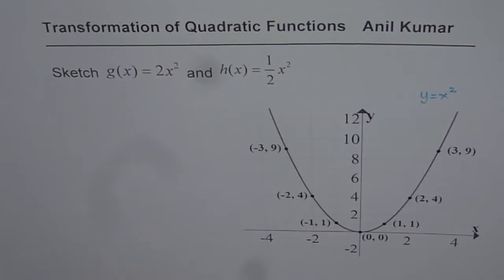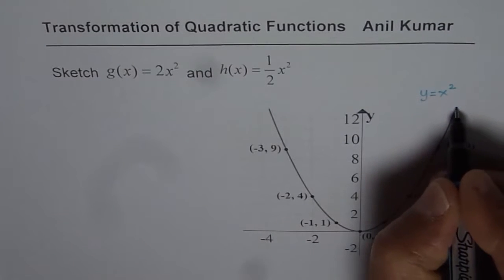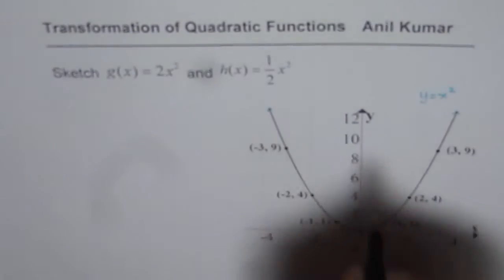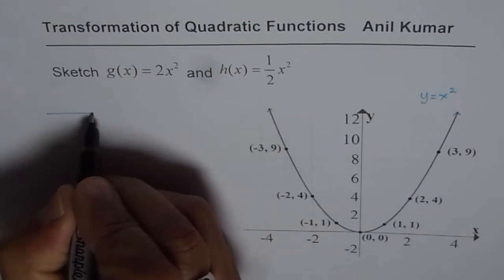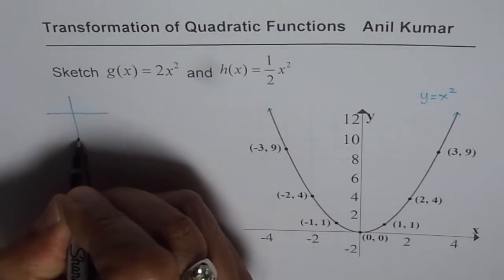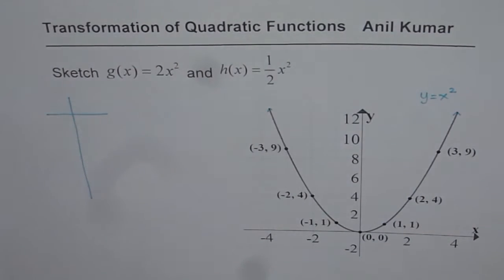Let me first explain how did we get this particular graph y equals to x square. To sketch any graph we can have table of values. We should always take some key points.